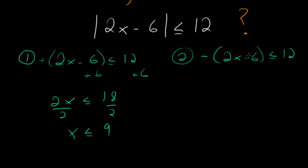And on the second equation, what I'll do first is multiply each side by negative 1. So that'll give me 2x minus 6, and when I multiply an inequality by a negative number, the inequality sign will flip. So I'll have greater than or equal to negative 12.